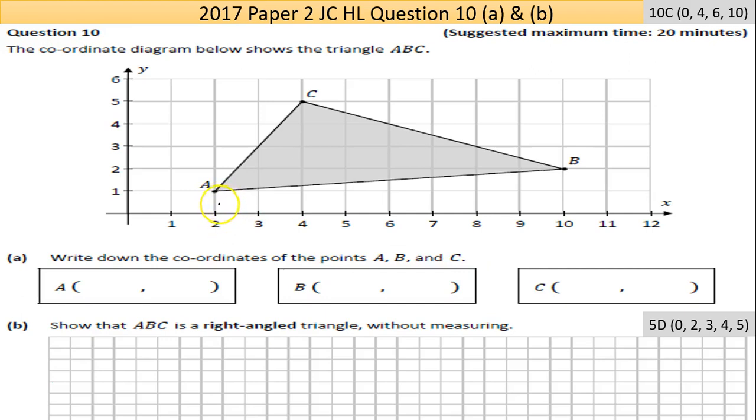Part (a) is asking us to write down the coordinates of points A, B, and C. This should be fairly handy at Junior Certificate Higher Level. You're looking to find the x value first on the x-axis. For point A, the line corresponds with 2, so x goes first, then y. The x value is 2 and the y value corresponds to plus 1.